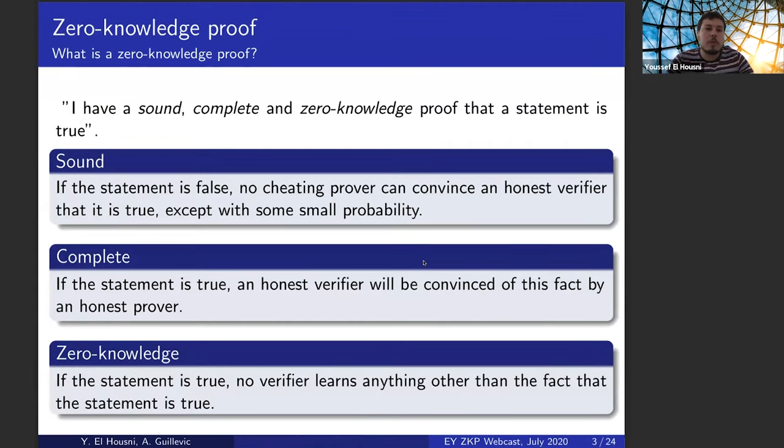So a zero-knowledge proof is a proof that is sound, complete and zero-knowledge. Sound meaning that if the statement is false, then no cheating prover can convince an honest verifier. Complete meaning that if the statement is true, then an honest verifier will be convinced.